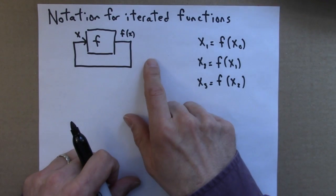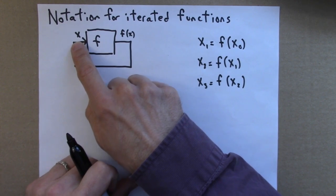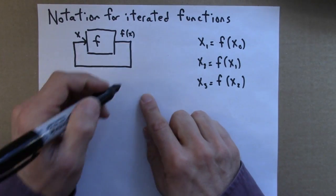So again we have an iterated function, which is just a loop. We input x, apply f to it, get an output, and then we repeat.